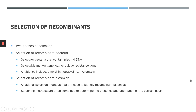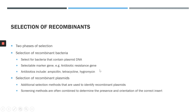There are two phases of selection of recombinants. The first step is to select for recombinant bacteria — those that have the vector DNA inserted into them. Selection of recombinant bacteria is usually done using a marker gene for antibiotic resistance. For example, the vector DNA may contain a gene for antibiotic resistance, such as ampicillin, hygromycin, or tetracycline resistance, and the bacteria are grown on agar plates containing the corresponding antibiotic.